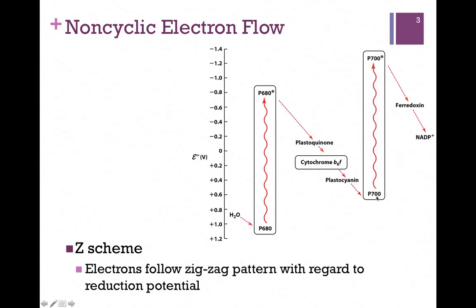A similar photooxidation event occurs at P700 chlorophyll Photosystem 1. Photon absorption puts it in a high-energy state with low-reduction potential. It passes those electrons to ferridoxin and ultimately to NADP+. Of course, it returns to the ground state and replaces those electrons from Plastocyanin. If you look at the changes in the reduction potential and turn this figure on its side, you can see why it's referred to as the Z-scheme.